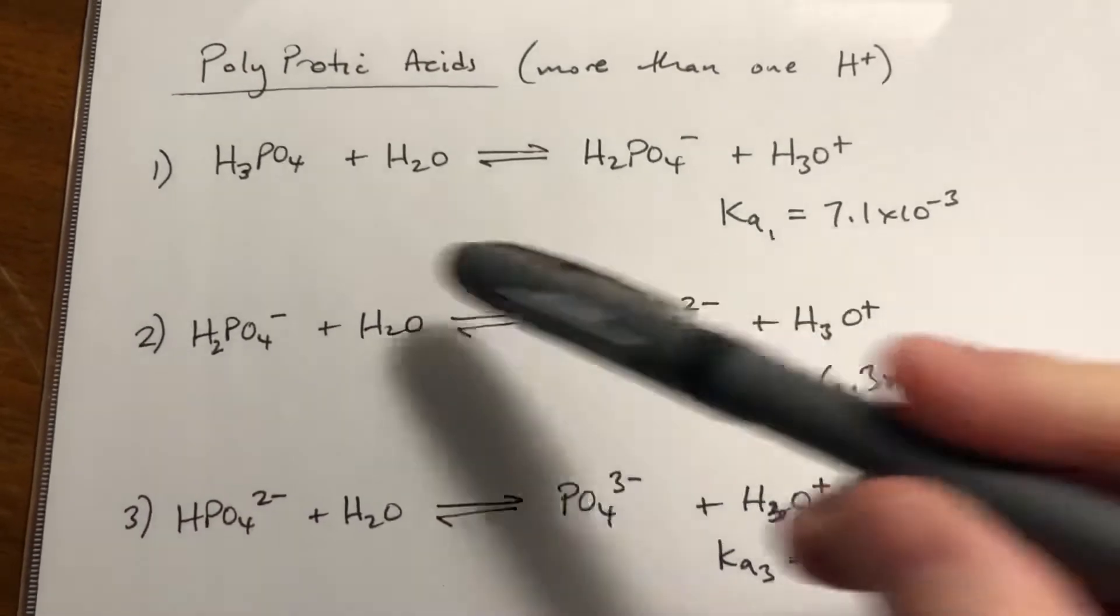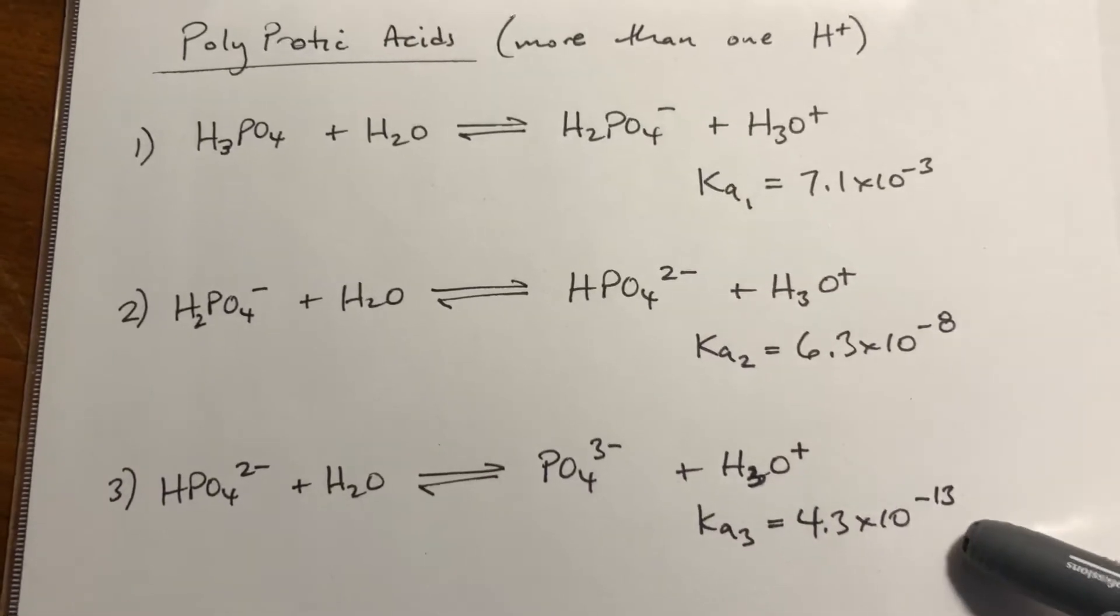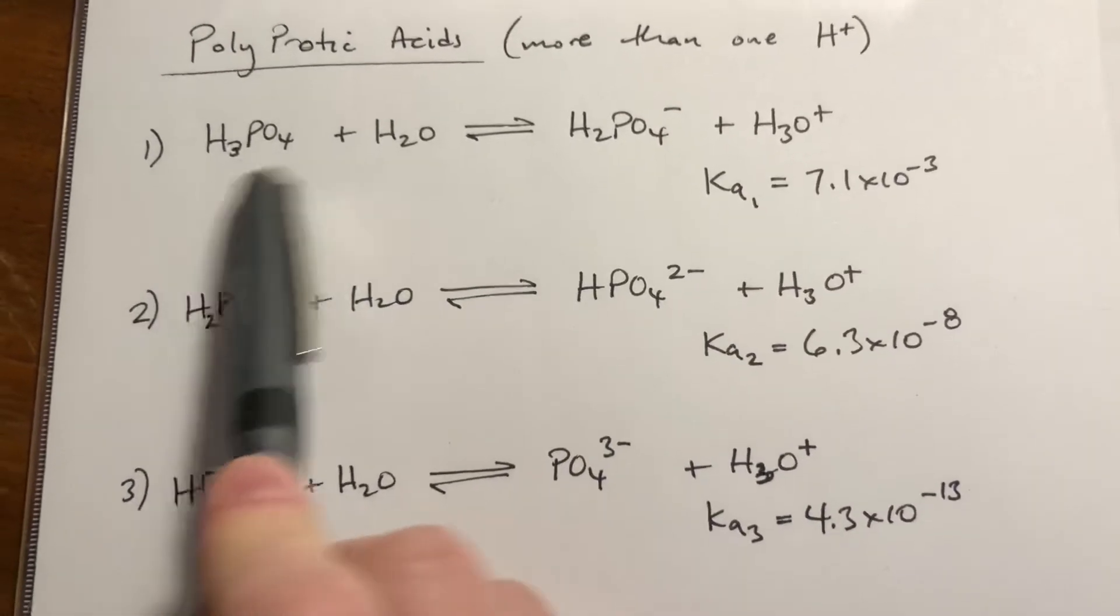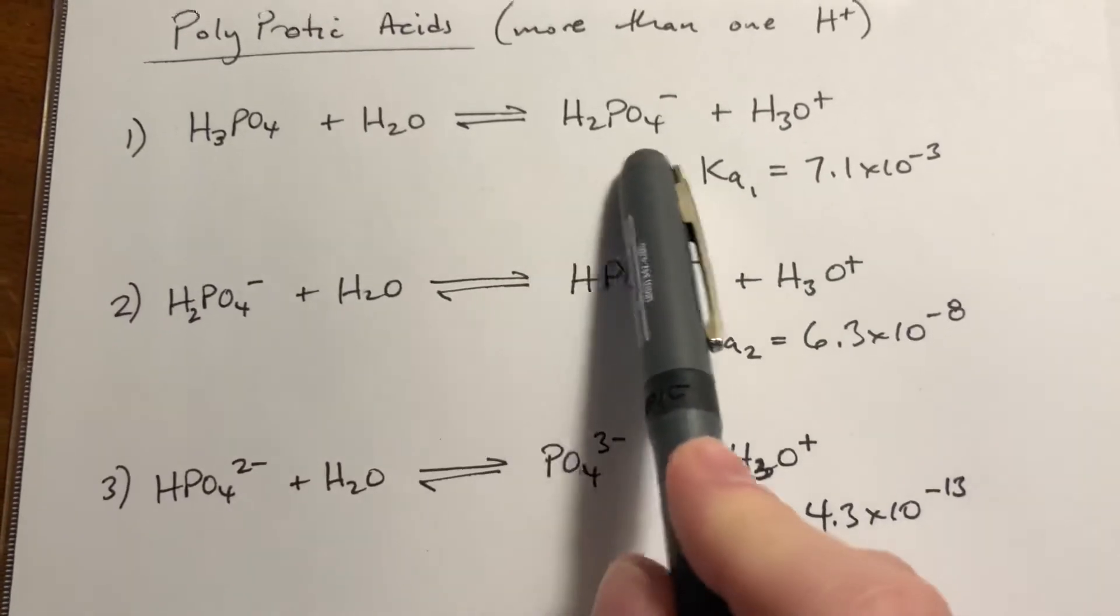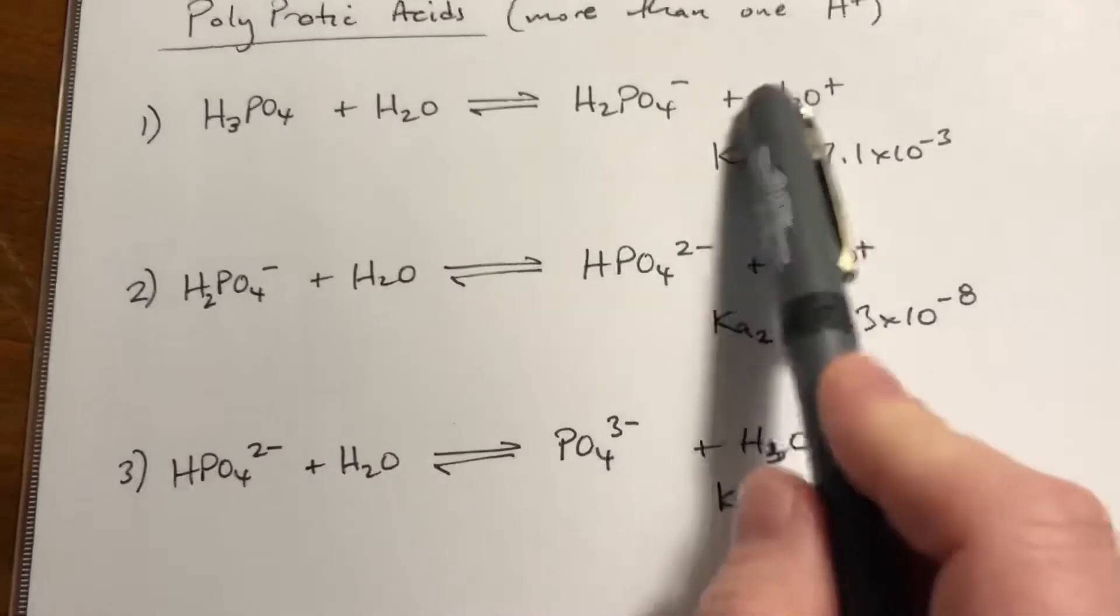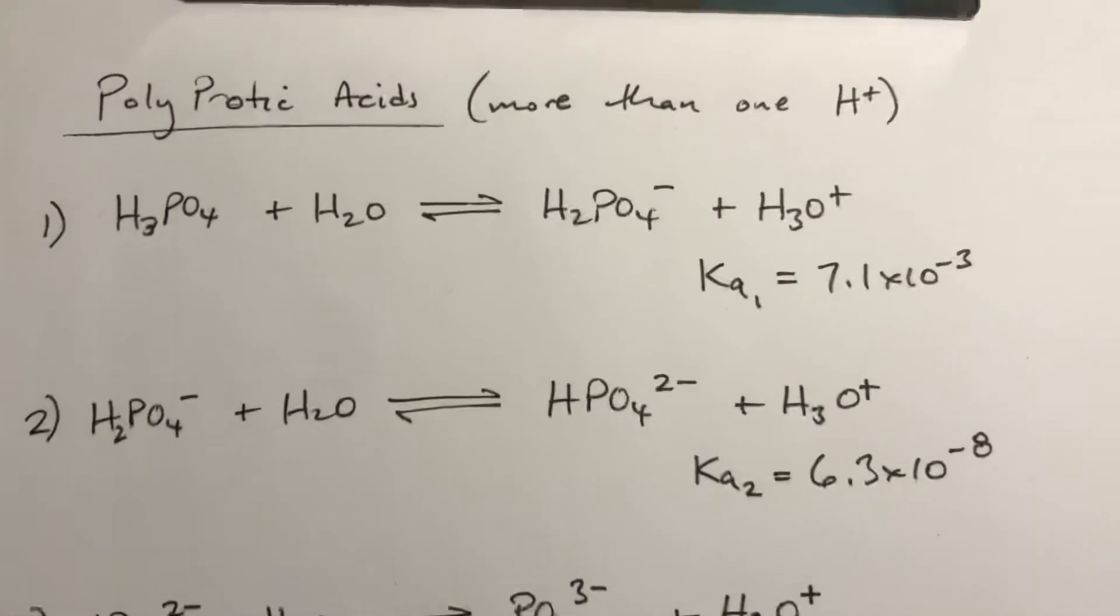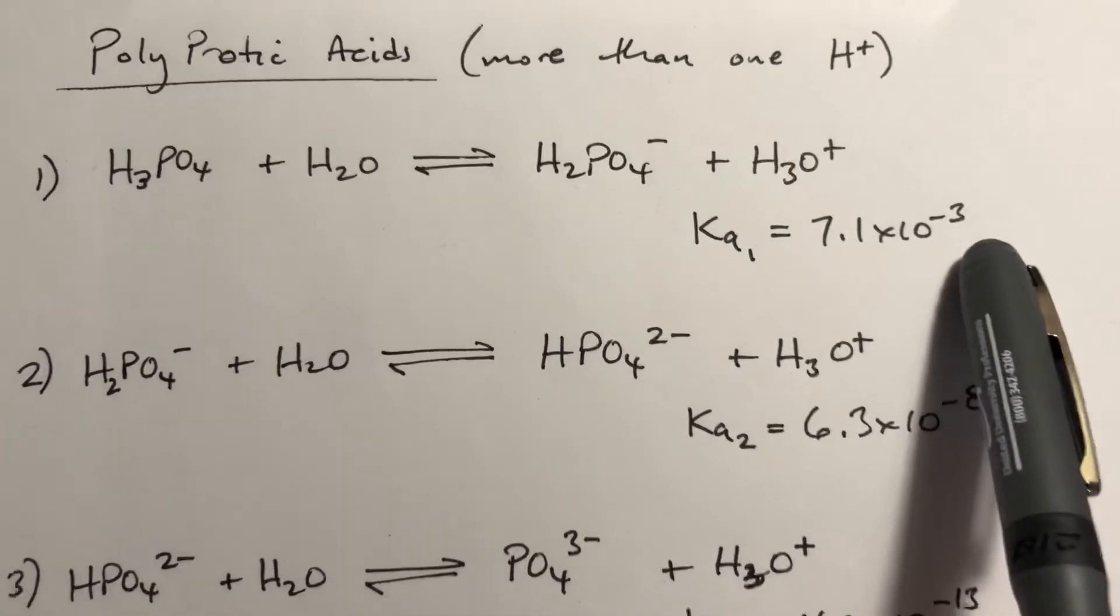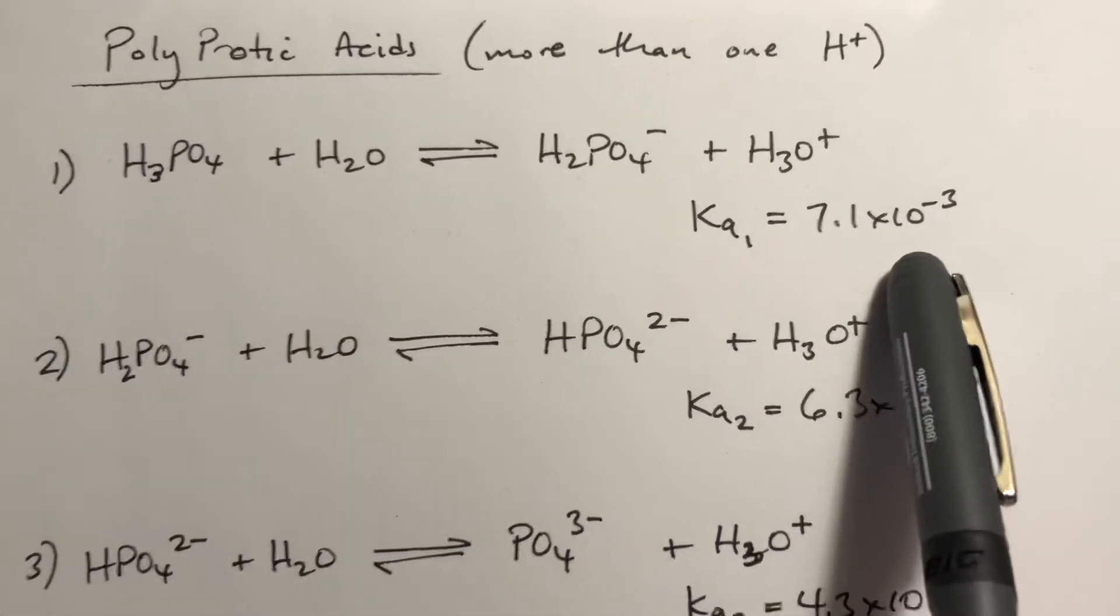What that means is each proton as it comes off yields a different Ka. So removing the first proton from H3PO4, basically throw this in water, one proton will come off and you'll form H2PO4- because it has lost one proton. You form an H3O+, just like a typical Ka reaction. The Ka for this is 7.1 times 10 to the negative third. Despite being a weak acid, this is a reasonably large Ka.